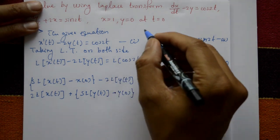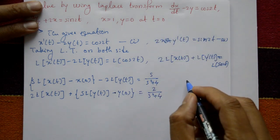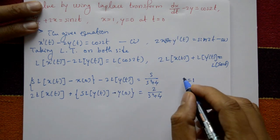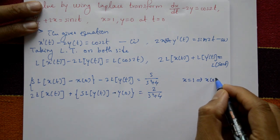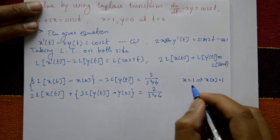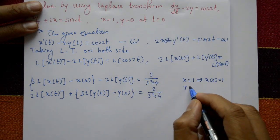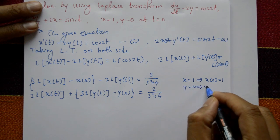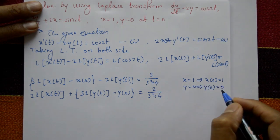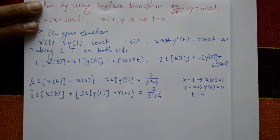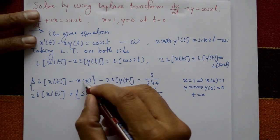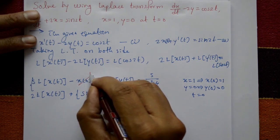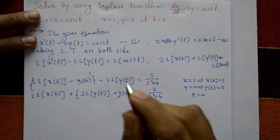Substituting initial conditions x(0) equals 1 and y(0) equals 0: equation 1 becomes s·L{x(t)} minus 1 minus 2·L{y(t)} equals s/(s²+4), and y(0) equals 0 is substituted into equation 2.